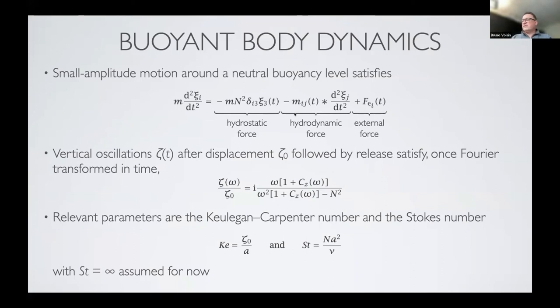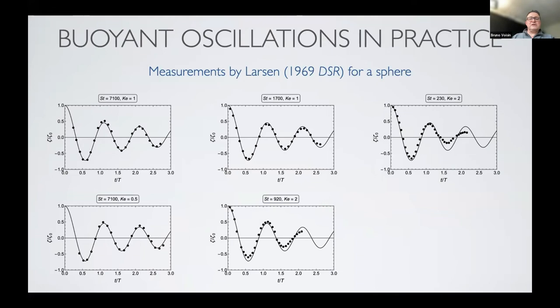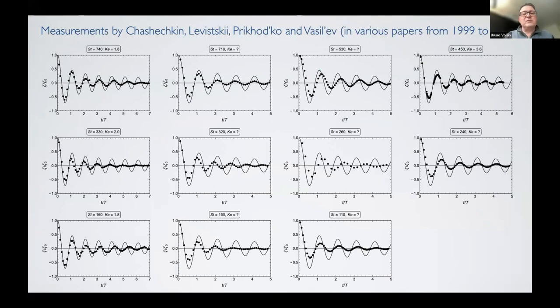The relevant parameters are what I call the Keulegan-Carpenter number, which is the initial displacement divided by the size of the body, and the Stokes number, which is assumed infinite so far. I will now show the result of this compared with the experiments of Larson. The Stokes numbers were large and the Keulegan-Carpenter number relatively small. There is good agreement, except when the amplitude of oscillation becomes larger and the viscosity becomes also larger. There is a corpus of results on this done in Yuli Chashechkin's group in Moscow, spread among several publications, looking at smaller Stokes numbers and larger Keulegan-Carpenter numbers.